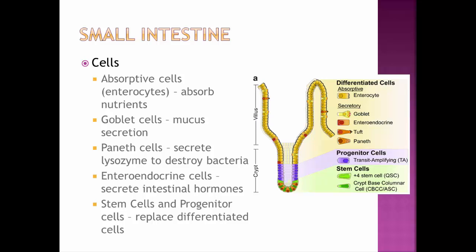There are several cell types along the small intestine performing different functions for digestion and absorption, housed along or between the finger-like villi. First are the absorptive cells, also called enterocytes — intestinal cells whose job is to absorb nutrients. You can see many enterocytes along the villi.